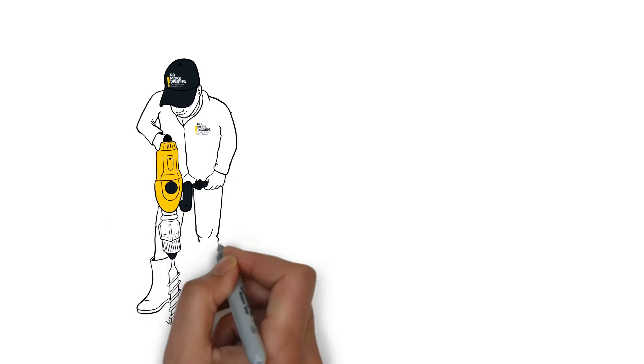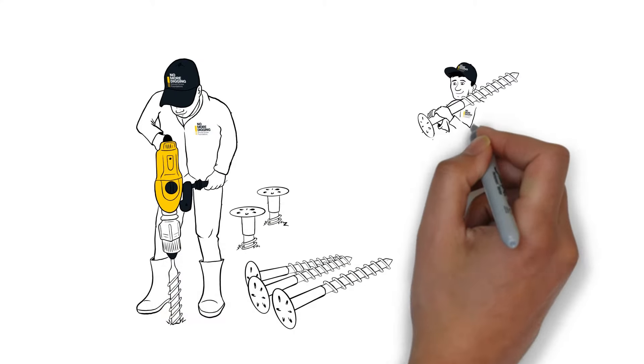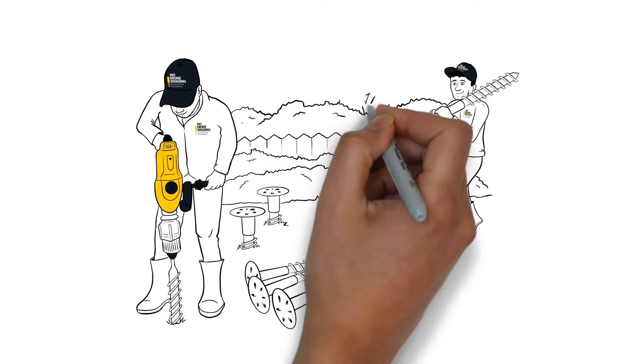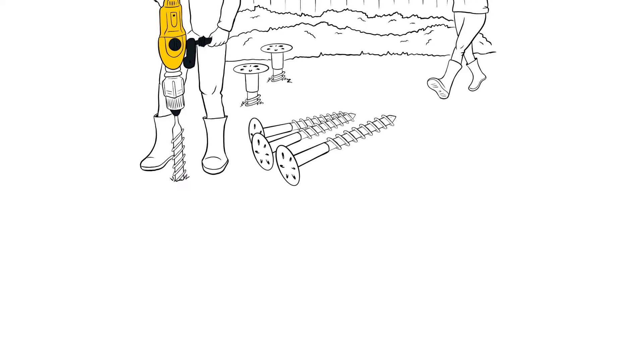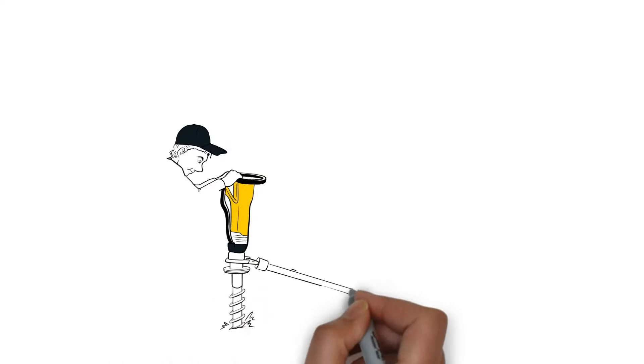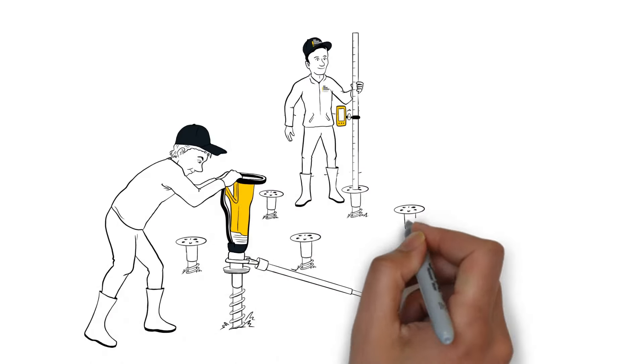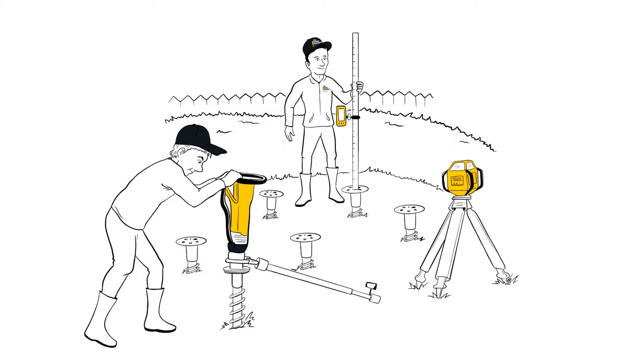Once we've drilled the pilot holes for the ground screws, we'll select the correct type of screws for your project and set out the screw locations. We'll meticulously install each one and use laser targeting to ensure they're perfectly level.